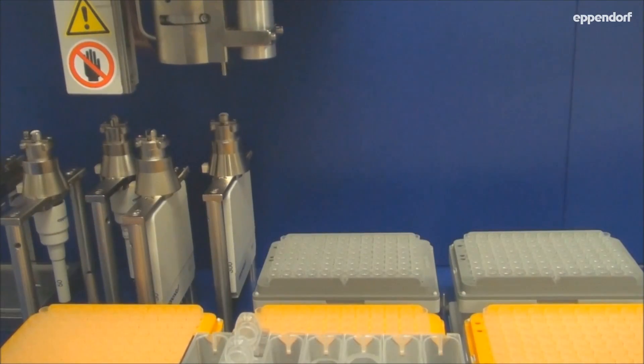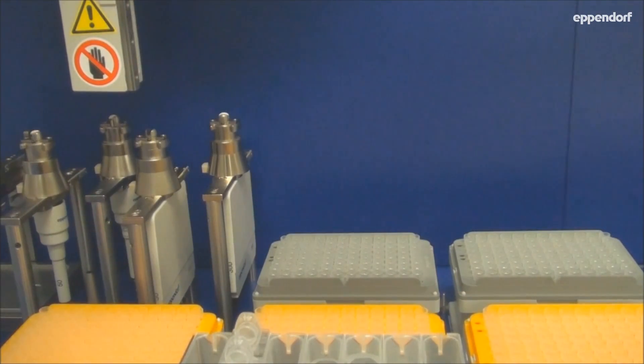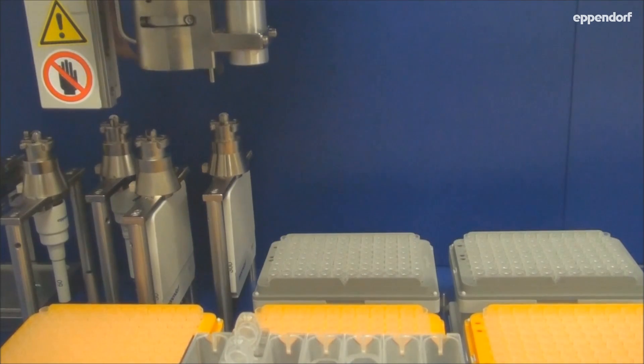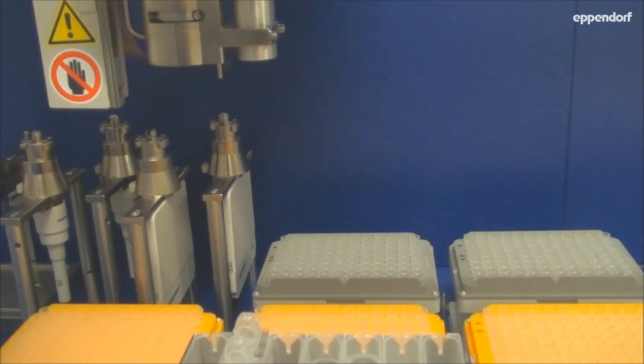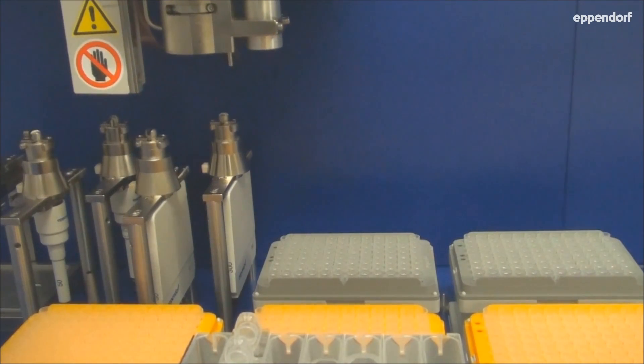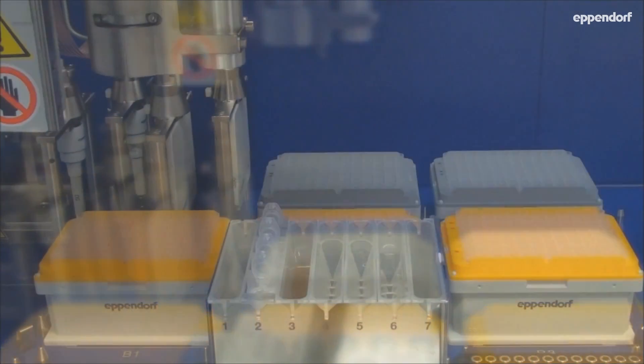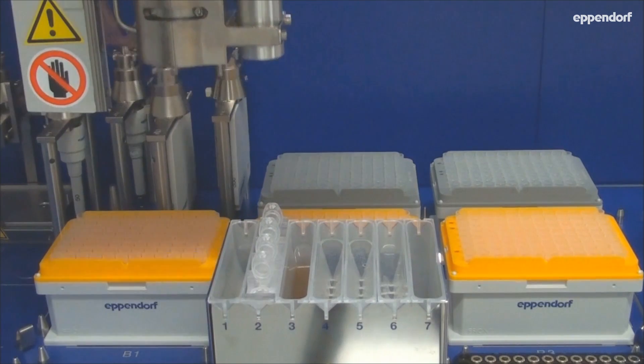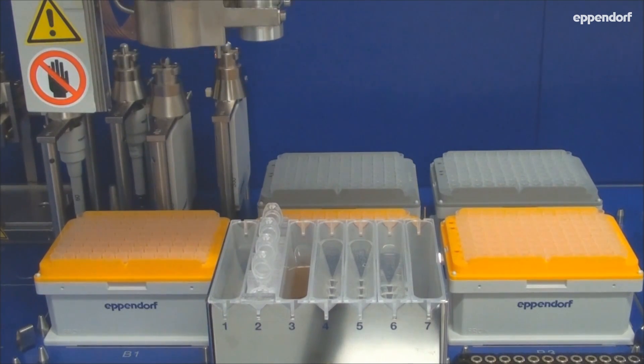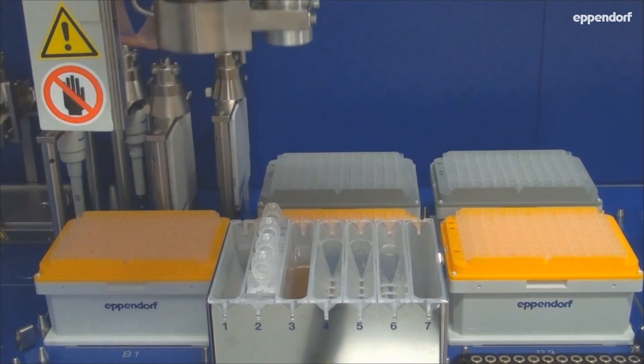The EPMotion 5075 TMX from Eppendorf has made the otherwise tedious sample preparation for next generation sequencing quick and painless. Manual setup can take as much as three days depending on sample number. However, the EPMotion can process 96 samples in a day, so your samples are ready to sequence the following day.